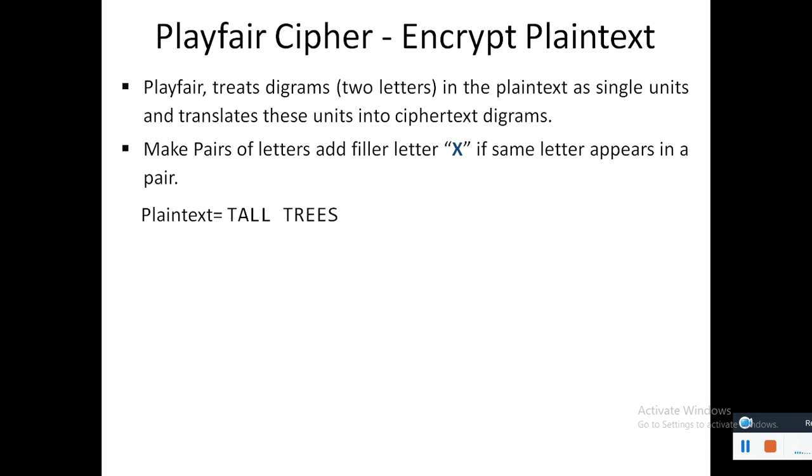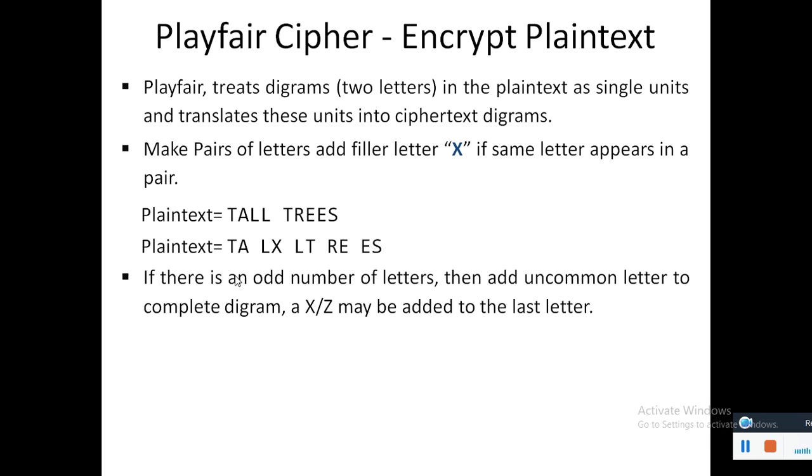For example, our plaintext is tall trees, so it is considered in pairs: T-A, L and L which occur, the same letter occurs twice, so we are using the filler letter X, so L-X, and again L-T, R-E, and E-S. If there is an odd number of letters, then add an uncommon letter to complete.